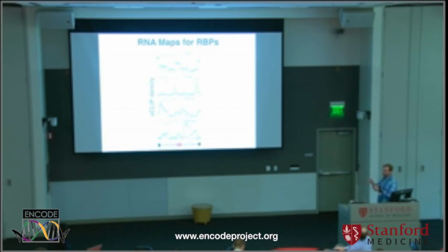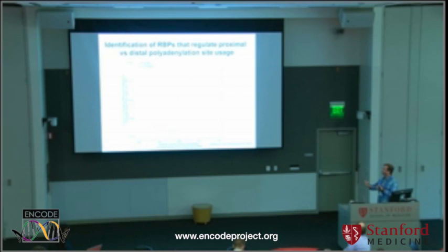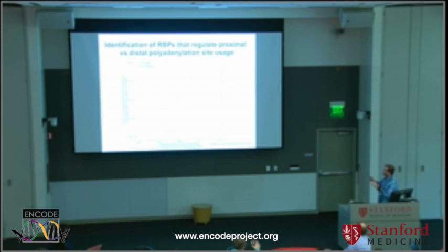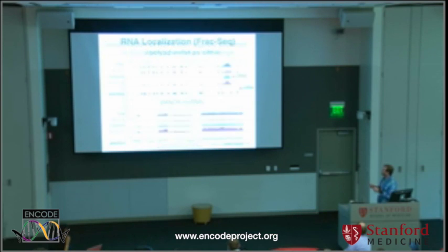We're using this now to assign functions to the different RNA elements. This is a paper we published with Chris Burge recently this year, where they identified a set of alternative last exons and wanted to identify proteins that would regulate them. We're able to highlight proteins that really enhance the utilization of the most distal last exon versus repressing utilization of the most distal exon. Just by scouring through this data, we can come up with really good candidates for proteins that regulate certain types of splicing events. Grace Yao in the next talk will discuss some of this in more detail for other types of RNA processing events.